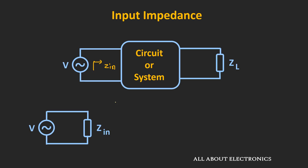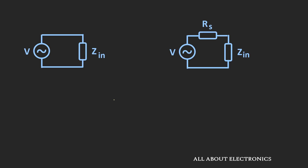Here we are assuming the applied voltage source is an ideal source. But in the actual case, this voltage source will also have some finite resistance. If we see the equivalent circuit, ideally this entire input voltage V should appear across the two terminals of the input impedance. But because of this finite series resistance, there will be some voltage drop across this resistor. The voltage which appears across the input impedance is equal to V' = V × Zin / (Zin + Rs). Because of this finite series resistance, the actual voltage appearing across the input impedance will be less than the input voltage. This phenomenon is known as the loading effect.